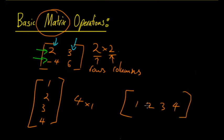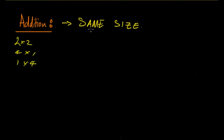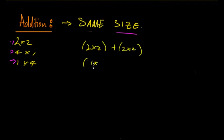The first operation is addition. You can add two matrices, but they have to be the same size. By same size I mean the descriptor we just used — two by two, four by one, one by four. You can only add a two by two plus a two by two, or a one by four plus a one by four. They have to match exactly.